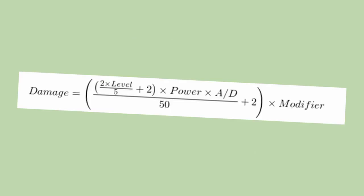Pokémon is a good example of a game which uses an attack divided by defense damage formula. It's not as simple as the first example, but the key part is there — attack divided by defense.